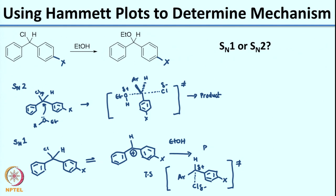When the Hammett plot was done experimentally, the observed rho was –5.09. Since in the SN1 transition state you have a strong positive charge very close to the aromatic ring, the substituent effect is large and negative — electron-releasing groups stabilize the positive charge, increasing the rate. Based on this large negative rho value, the conclusion is that the reaction proceeds by SN1 and not SN2.